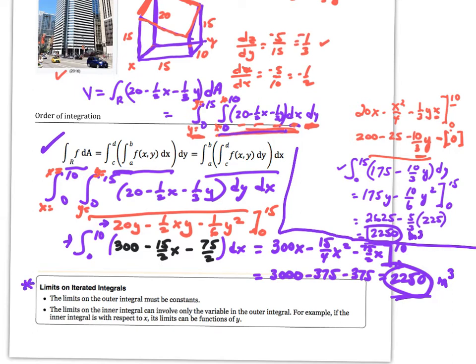There's an important rule about limits on iterated integrals. The limits on the outer integral must always be constants. The limits on the inner integral can involve only the variable of the outer integral. So if the inner integral is with respect to x, its limits can be a function of y — because you're working with y eventually on the outside.